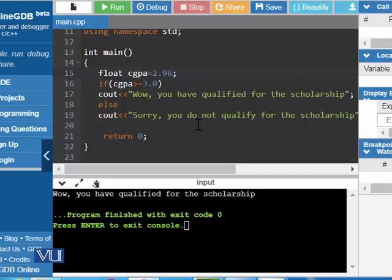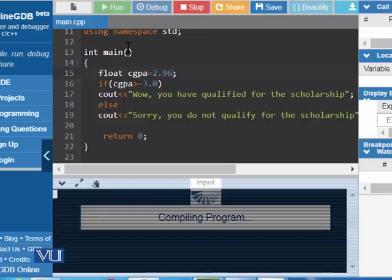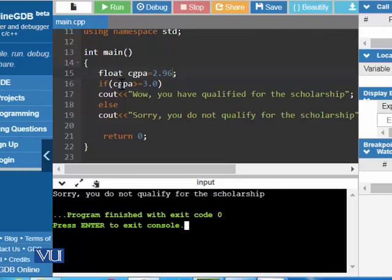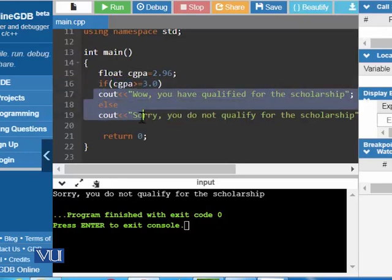2.96 is less than 3. What will it display? Let us see. As 2.96 is less than 3.0, this statement has not executed and the sorry statement has executed: sorry you do not qualify for the scholarship.